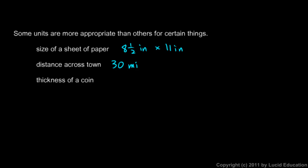Most people would be more comfortable measuring that distance in miles. The thickness of a coin, a penny for example, is about 1.5 millimeters thick. So you don't want to measure that in miles or even feet — use a small unit for measuring small distances.